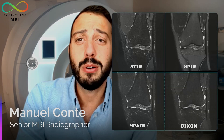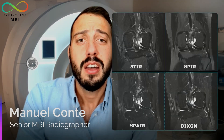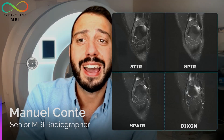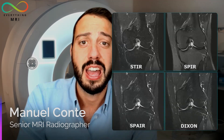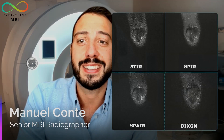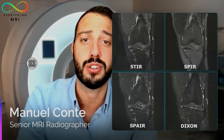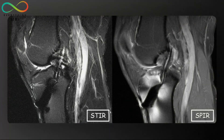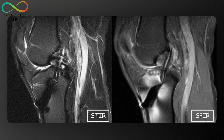An additional consideration is about the type of fat saturation to be used. Some sequences are more recommended than others because they are not particularly affected by magnetic field inhomogeneity. Make sure to check the video on different fat saturation techniques on the Everything MRI YouTube channel. In general, STIR sequences can be considered the sequences of choice for fat saturation when imaging patients with metal implants, as they are much more resistant to B0 inhomogeneity compared to sequences with spectral suppression of the fat signal, like SPIR for example. We can clearly see that signal loss and signal pileup are significantly less pronounced when STIR is acquired.